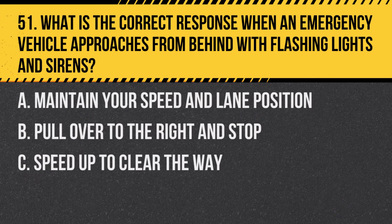Question 51. What is the correct response when an emergency vehicle approaches from behind with flashing lights and sirens? A. Maintain your speed and lane position. B. Pull over to the right and stop. C. Speed up to clear the way. Answer: B. Pull over to the right and stop. Drivers should yield to emergency vehicles by moving to the right and stopping.